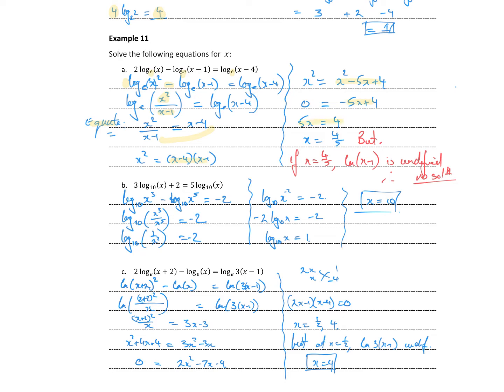We multiply the (x minus 1) across and expand, and after a little bit of manipulation we get x equal to 4 fifths. But it's easily missed — we should check the validity of our answer. If x equals 4 fifths, the term natural log of (x minus 1) would be undefined because we'd be taking the natural log of a negative number. So even though algebraically we get x equal to 4 fifths, in this situation there is actually no solution.